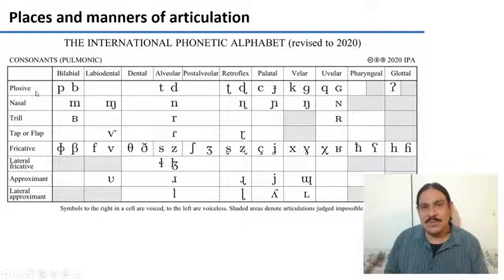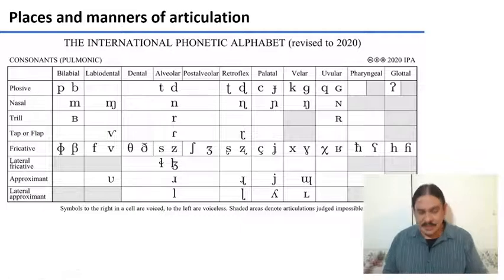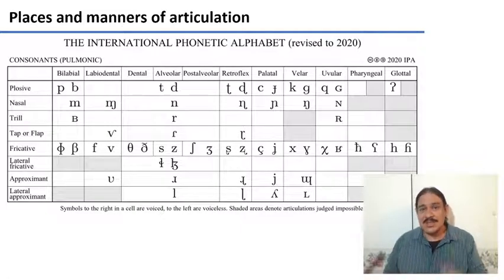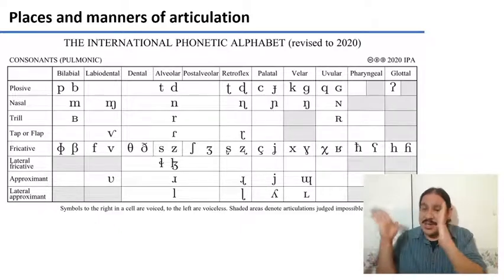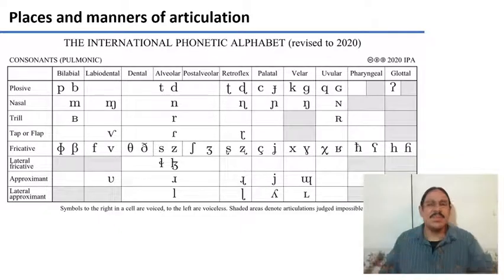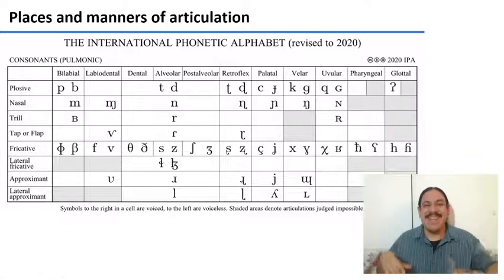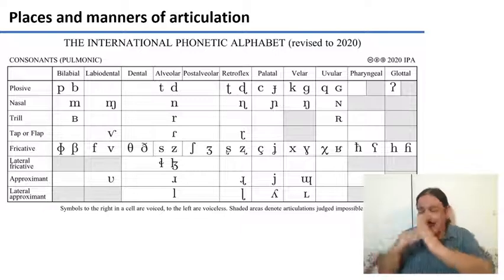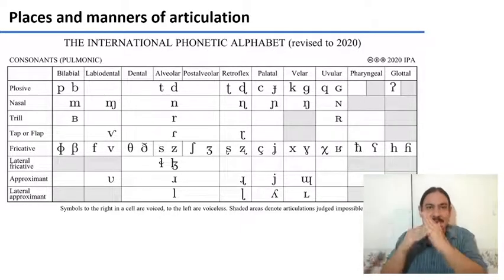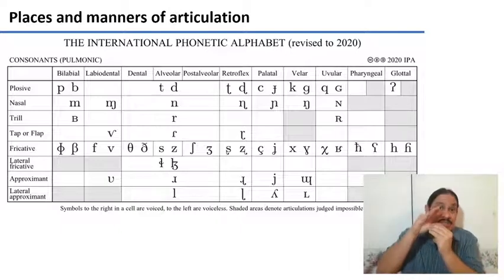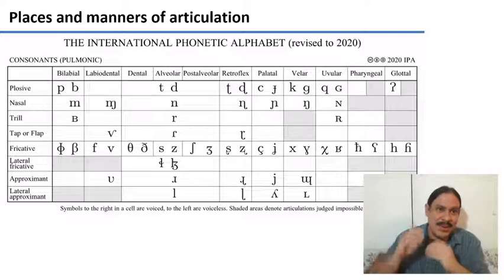We looked at plosive manners of articulation. For a stop or a plosive consonant there is a complete blockage of the air flow. If you're going to say a word like 'pet', you close your lips and then leave them in a closed position and let air accumulate behind your lips until there's enough of it that when you release your lips there's going to be a tiny puff of air coming through. Pet.